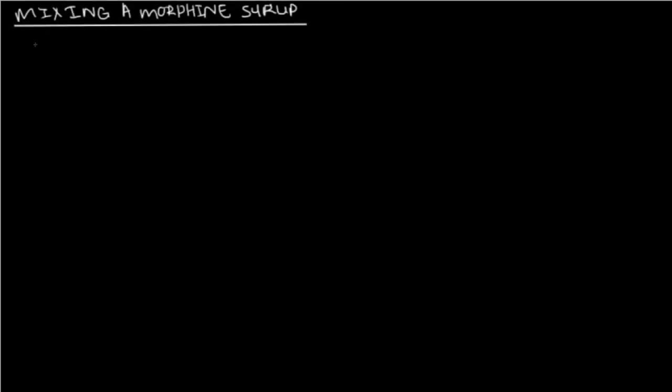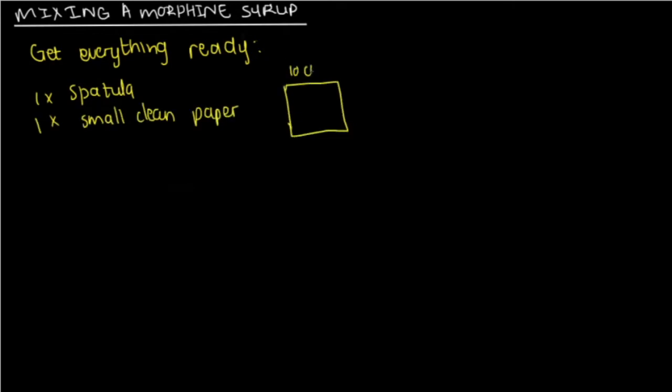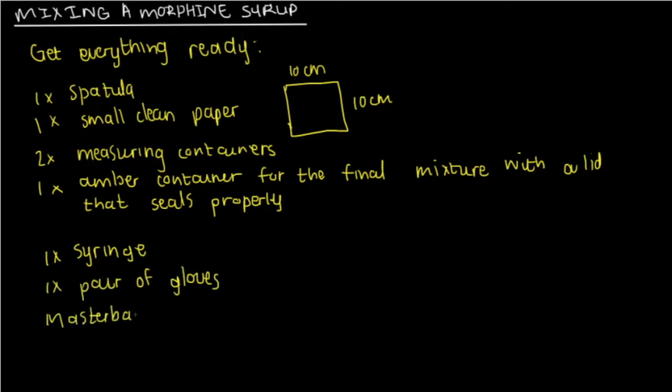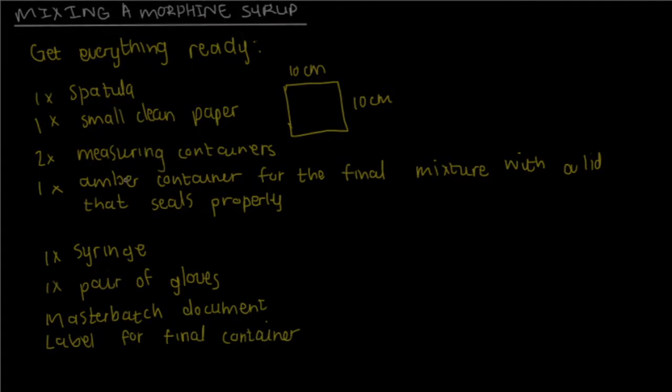So, step four is going to be to get everything ready. So, you're going to need one spatula, one small, clean paper, maybe 10 by 10 centimeters, to weigh your powder on. Then, two measuring containers for the two liquids, one amber container, plus a lid for your final solution, which you have to clean with distilled water, and you dry it thoroughly. Very important to make sure that the lid seals properly. You don't want your ready-mixed morphine syrup to drip out of the container. And then, one syringe, the biggest one you have, if you have a 60 ml, in this case, great stuff. And then, one pair of gloves, and the master batch document, plus your label for your final container.